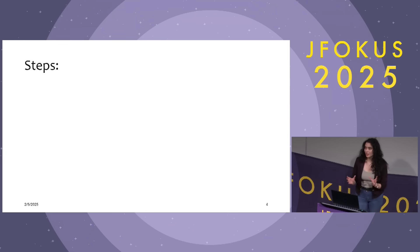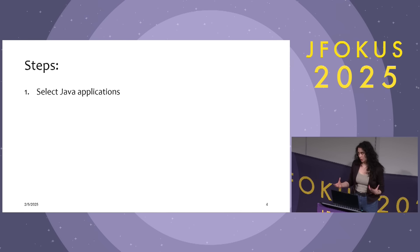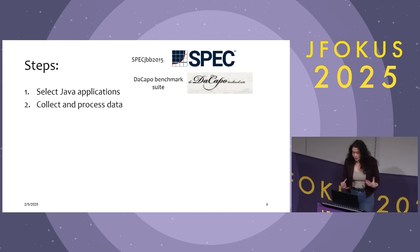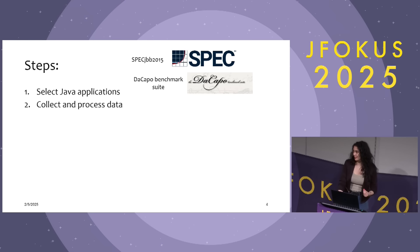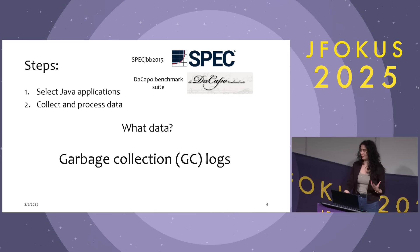This was the problem we addressed in my thesis, and now we will talk about the main steps I followed. First, we need to select some Java applications that we can measure their performances accurately. For that, we use some popular benchmarks like spec-JBB 2015 and DaCapo, as some of you may already know. Then we need to collect some data and process it to train the machine learning model. But hold on — what is the data? From what data will the machine learning model learn and tell us the optimal flag values?